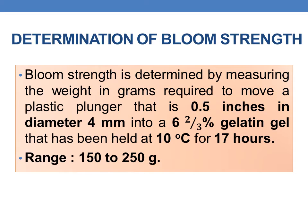Coming to the determination: bloom strength is determined by measuring the weight in grams required to move a plastic plunger — 0.5 inches and 4 mm in diameter — into a 6⅔% gelatin gel that has been held at 10 degrees Celsius for 17 hours. The range of bloom strength is 150 to 250 grams.